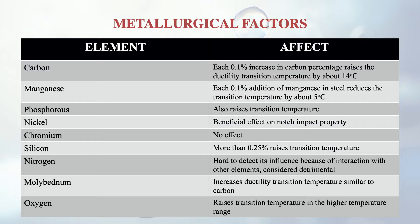Metallurgical factors also affect impact toughness. Adding certain amounts of alloying elements changes the transition temperature. Each 0.1% addition of manganese in steel reduces the transition range. Phosphorus addition raises the transition temperature. Nickel addition has a beneficial effect on impact properties — adding nickel to existing steel will be beneficial. Chromium has no significant effect. Silicon above 0.25% addition is considered detrimental due to its interaction with other elements. Molybdenum increases the ductility transition temperature, similar to carbon. Oxygen also raises the transition temperature range.